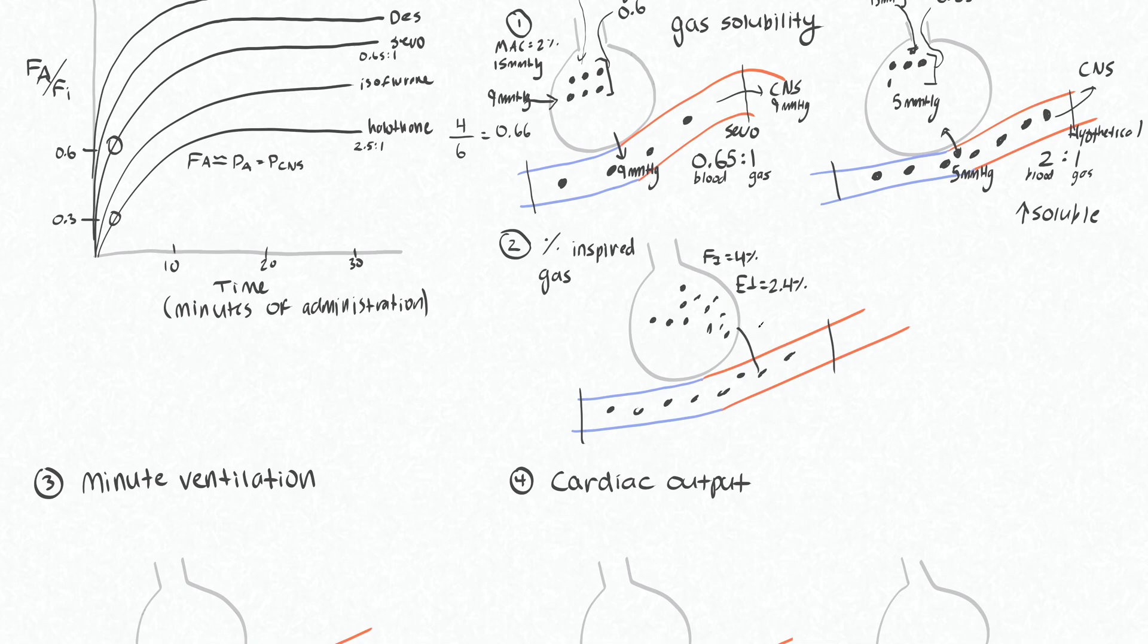And actually the partial pressure here is 18 millimeters of mercury, which we know is above the 15 millimeters of mercury of partial pressure that we need to see in our central nervous system for this gas to have an effect.